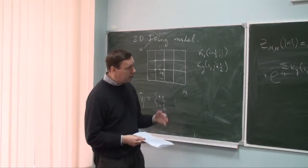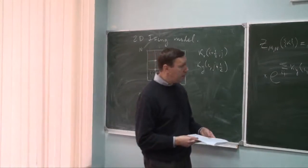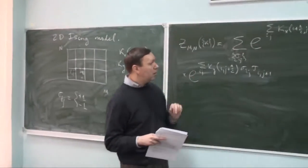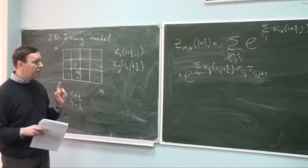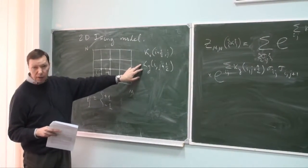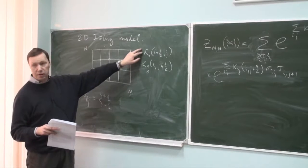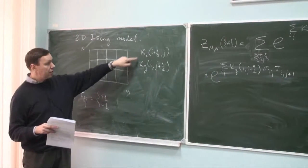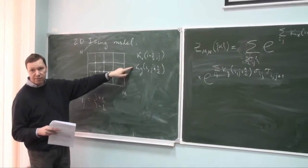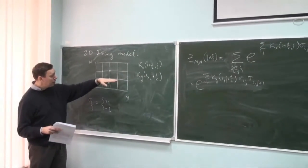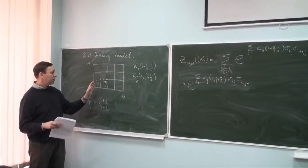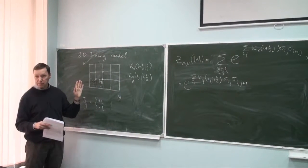Most results will be presented for the case where all K_x are the same and all K_y are the same but different from each other — the anisotropic Ising model, where coupling strength differs in horizontal and vertical directions.